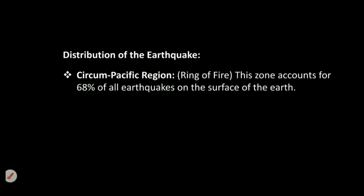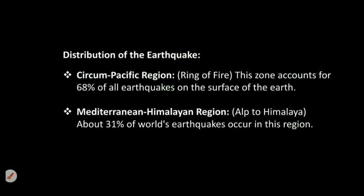Distribution of earthquake. First, the Circum-Pacific region, also known as the Ring of Fire, due to more volcanic eruptions arising. This zone accounts for 68% of all earthquakes on the surface of the Earth. Next, the Mediterranean to Himalaya region — Alps to Himalaya — about 31% of the world's earthquakes occur in this region.